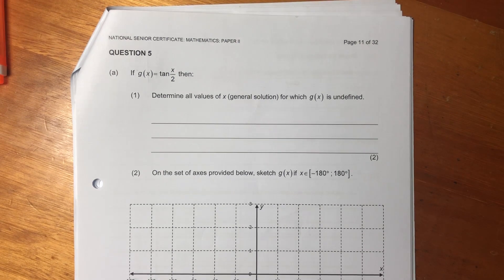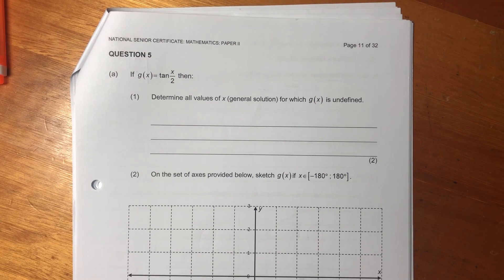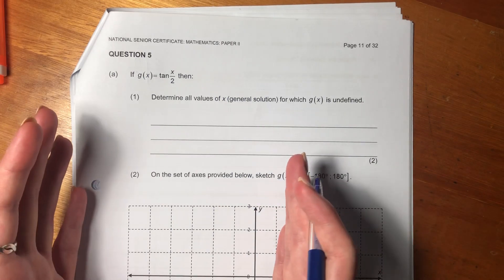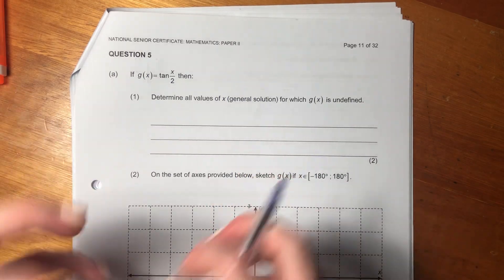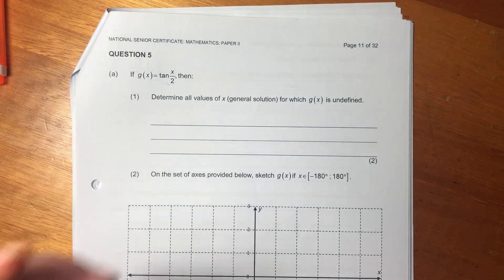then determine all values of x for which g of x is undefined. Now, this is an interesting question because what it's doing is asking us to display our understanding of what tan, the period of tan, the asymptotes of tan, and how it can be manipulated when you put a coefficient in front of the angle.